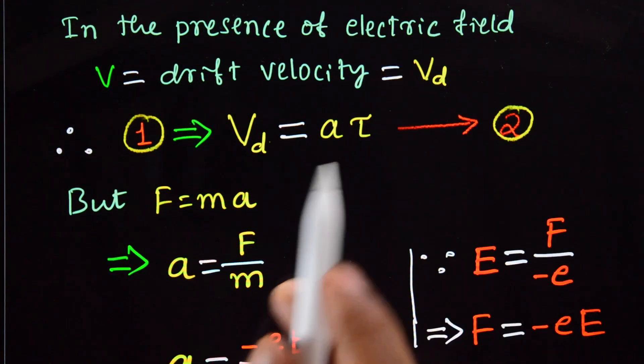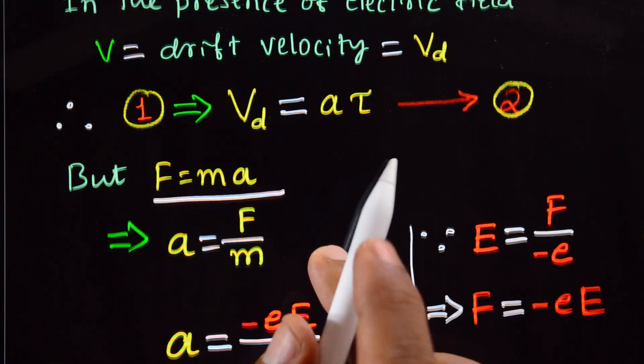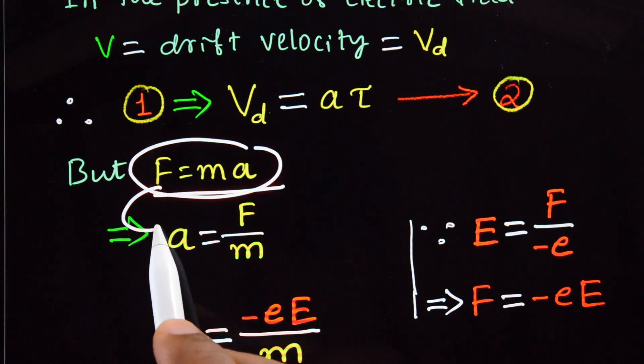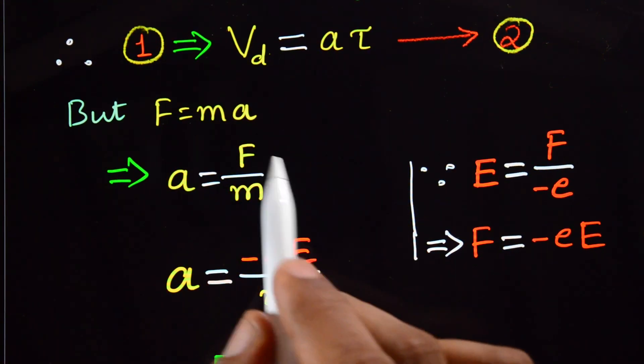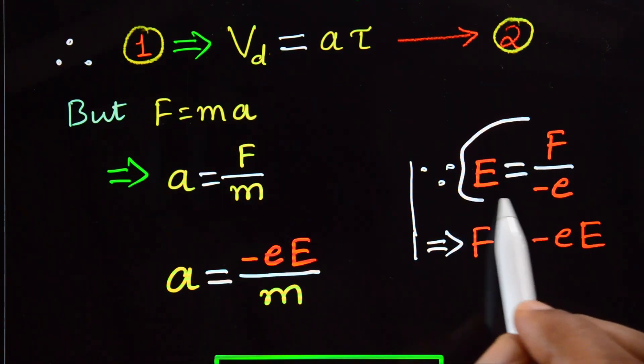But we know F equals ma. From this equation, we can write a equals F divided by m.